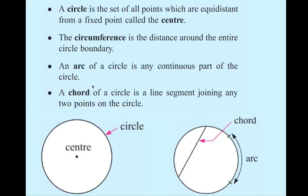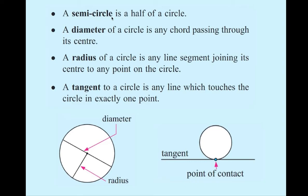Here they are: circle, circumference, arc, and chord. Please take a moment to fill in your descriptions. I hope you added those. There are a few more to add: semicircle, diameter, radius, and tangent. Pause the video and take a moment to add these definitions to your circle study guide.